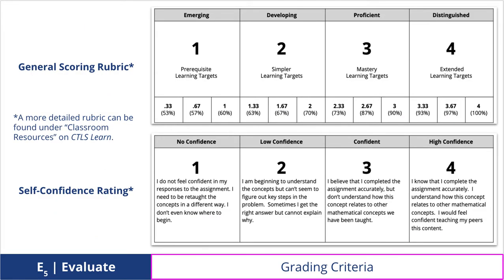While a more detailed version of the grading rubric is uploaded to your class resources on CTLS Learn, this shows an overview of both how you will be evaluated on mastering your learning targets and how you will be asked to evaluate your self-confidence as we progress through the content. Please take note of the percentage equivalents for each of the numbers between 1 and 4. A score lower than a 1 usually means there is not enough evidence on the student artifact to indicate any relatable knowledge to the content or its prerequisite skills.